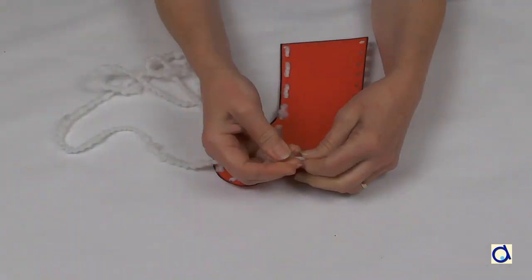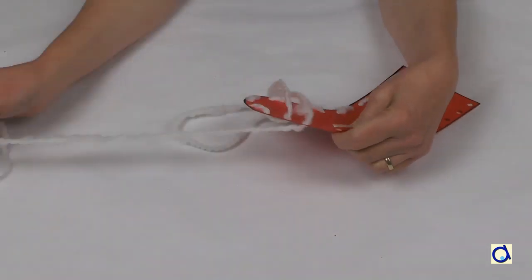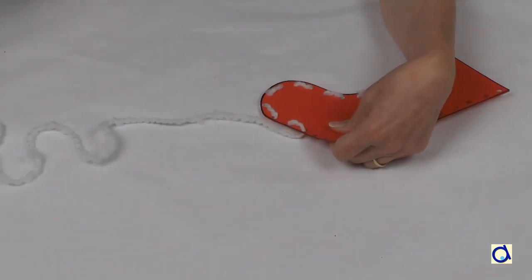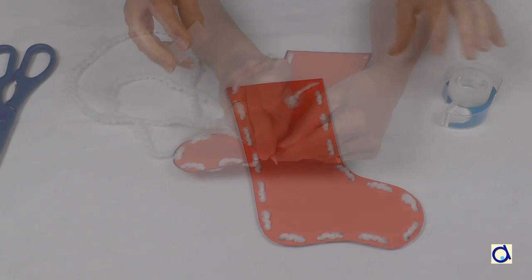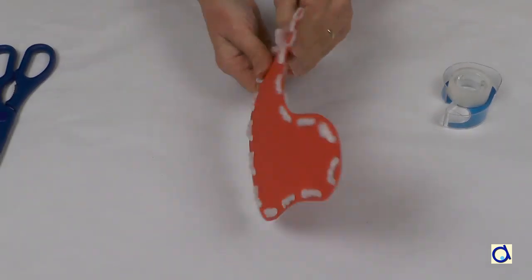A first possibility is to thread the yarn up and down all along the edge of the stocking. This is a simple pattern that gives a nice result. When you are finished with the yarn, paste the end on the back of the stocking.